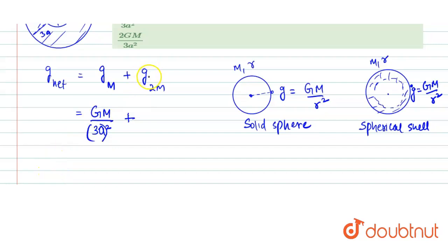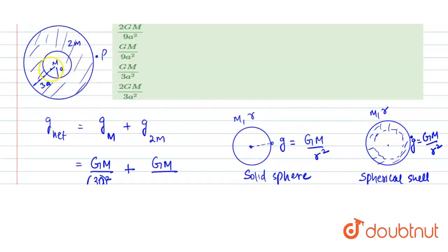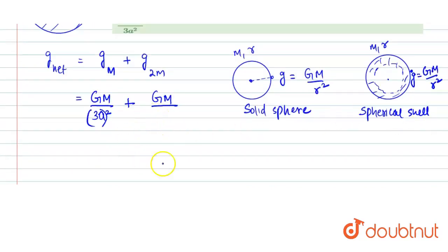And for 2M mass, that would be... the distance from the center of the point, this distance will become 3a. So mass is 2M, so G into 2M